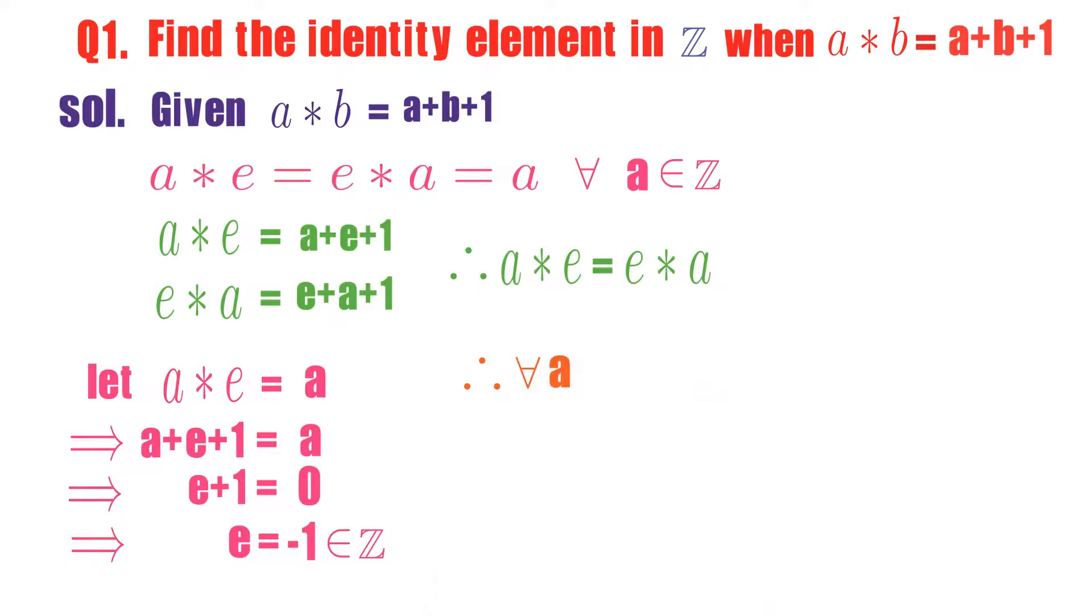Now what we got: for any a in Z, you take any a in Z, there exists minus 1 in Z such that a star minus 1, you check it, calculate a star minus 1, you will get a only. a star minus 1 equals minus 1 star a equals both will give you a only.